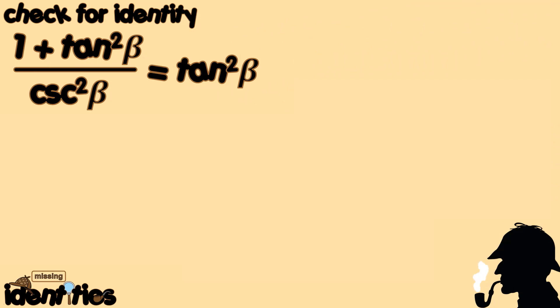Case number 21. Verify the given identity: the ratio of 1 plus tangent squared beta over cosecant squared beta is equal to tangent squared beta. In order for us to verify whether this equation is true and correct,